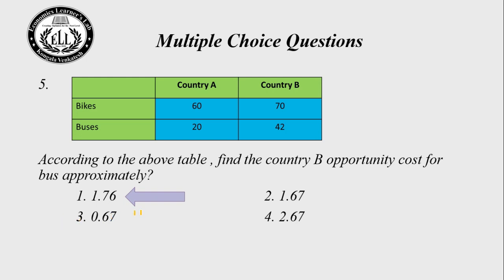I want to make a correction on yesterday's question — I made a small mistake. The right answer is Choice 2, not 1.76. The opportunity cost for Country B is approximately 1.67, not 1.76.